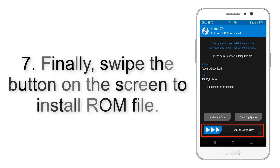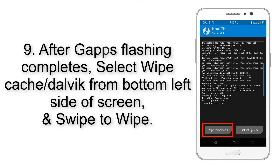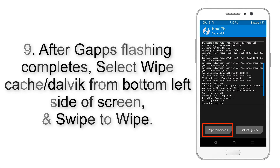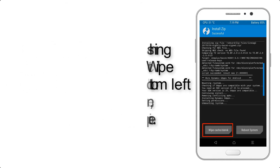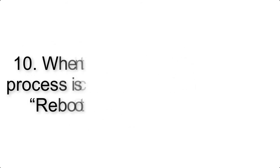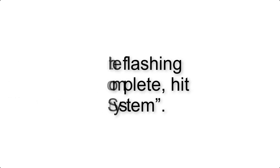Step 7: Finally, swipe the button on the screen to install the ROM file. Step 9: After GApps flashing completes, select Wipe Cache and Dalvik from the bottom left side of the screen and swipe to wipe. Step 10: When the flashing process is complete, hit Reboot System.